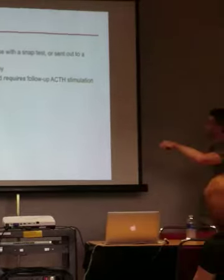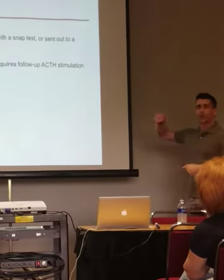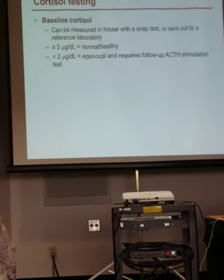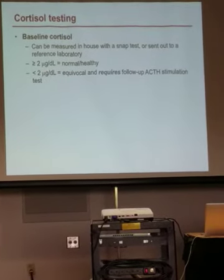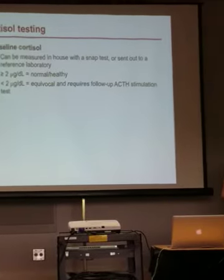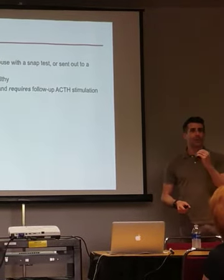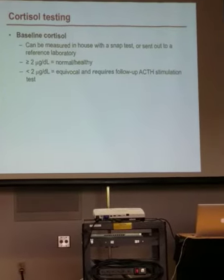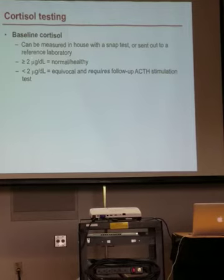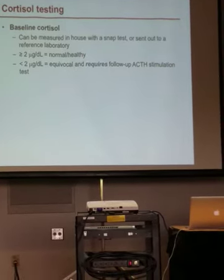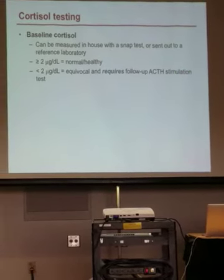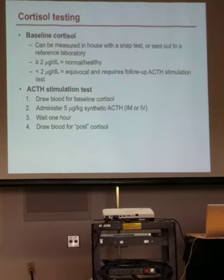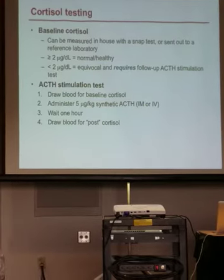If you happen to catch an animal's cortisol at a trough, the baseline cortisol could be less than two, but that doesn't mean the dog has Addison's disease. It means you need to follow up with an ACTH stim test. Greater than two rules it out; less than two requires a follow-up test. It does not mean your dog has Addison's disease if it's less than two.